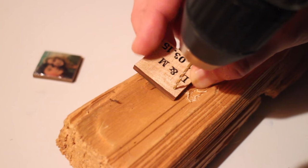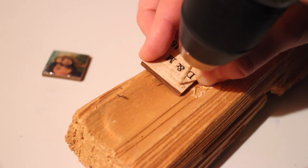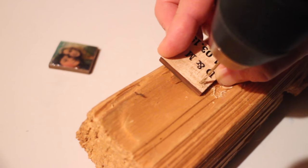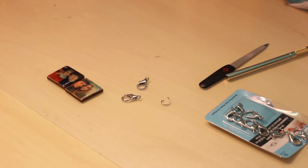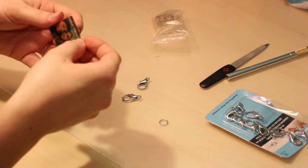The next step is to drill a hole through one of the corners. Now I'm taking one of the rings, opening it up and putting it through the hole that I drilled, and then I'm putting another ring on top of that to make it chain.